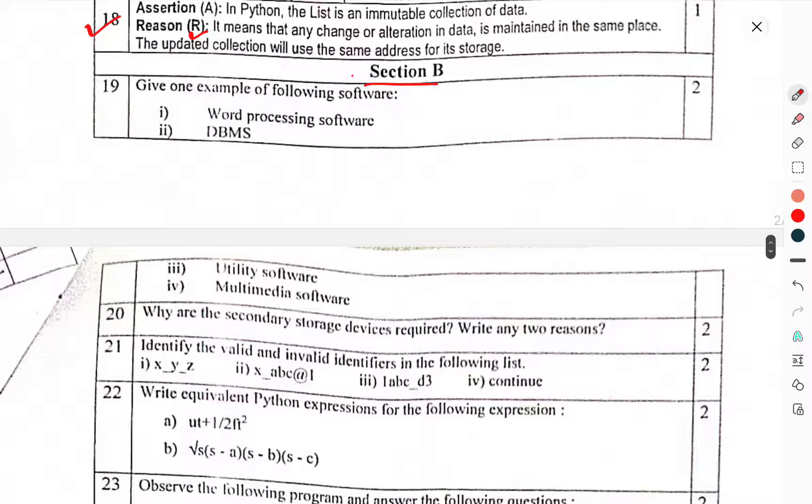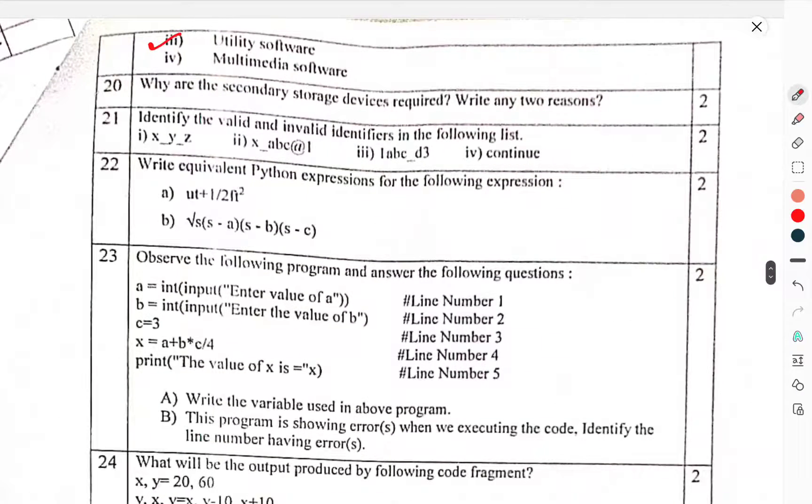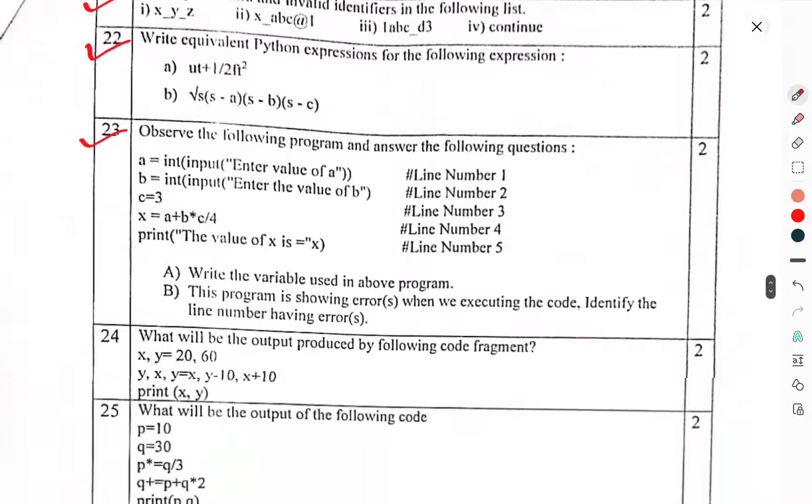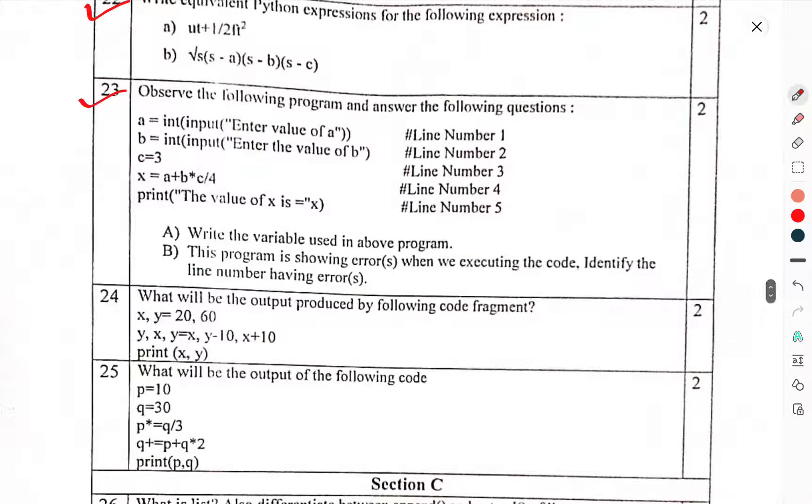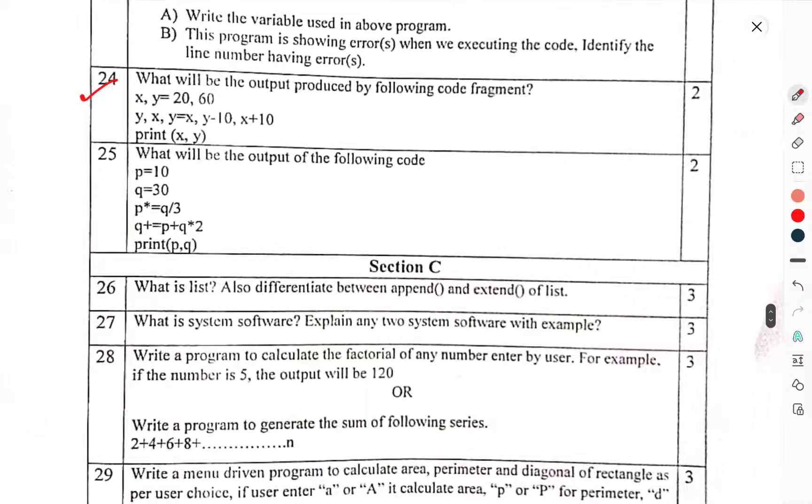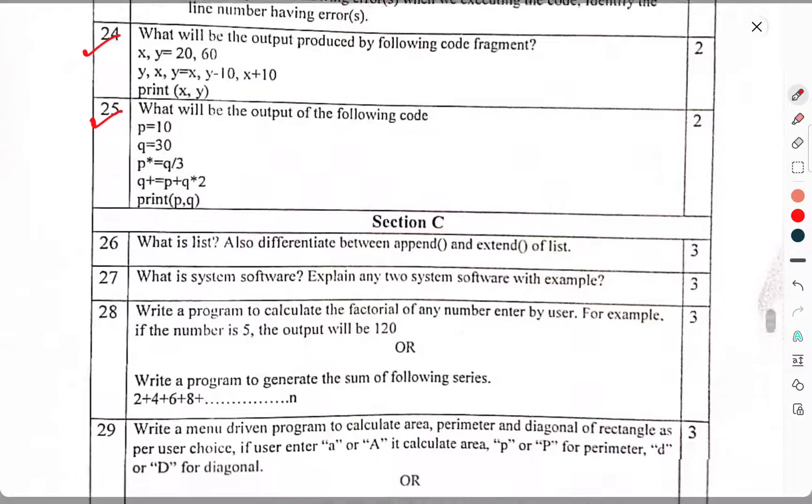Now we have come to Section B. Question 19: Give one example of the following software - word processing software, utility software, multimedia software. Question 20: Why are secondary storage devices required? Write any two reasons. Question 21: Identify the valid and invalid identifiers in the following list. Question 22: Which equivalent Python expression for the following expression? Question 23: Observe the following program and answer the following questions. Question 24: What will be the output produced for the following code fragment? Question 25: What will be the output of the following code?